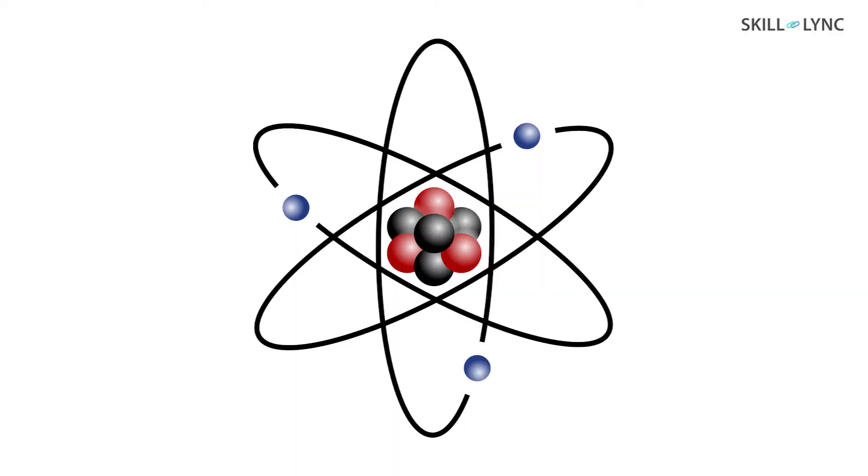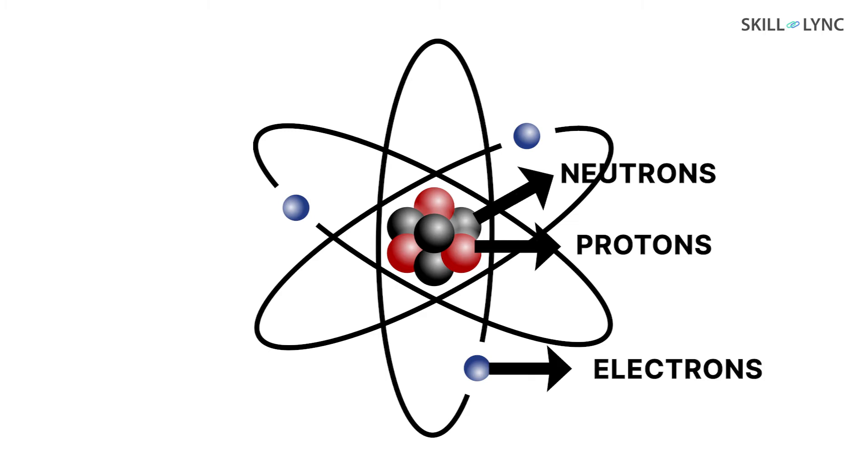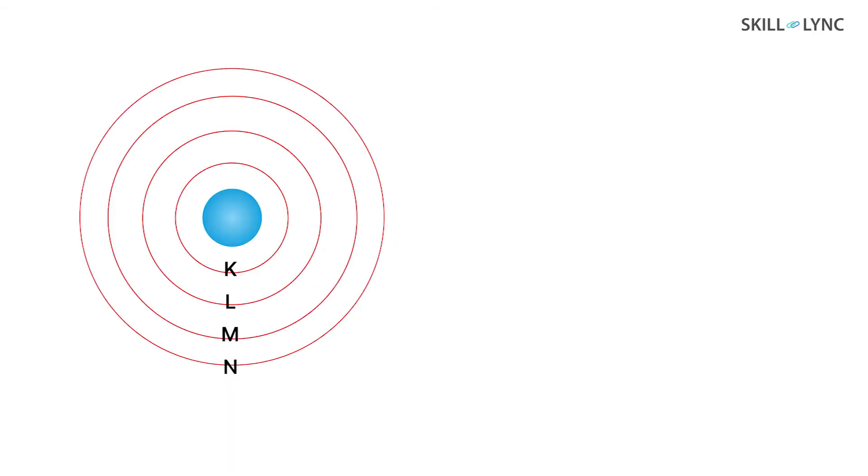Every atom has an atomic nucleus, protons, neutrons and electrons. The nucleus holds the protons and neutrons, while the electrons revolve in the various atomic shells. The atomic shell proposed by Bohr is basically an orbital in which the electrons are arranged in a particular order.